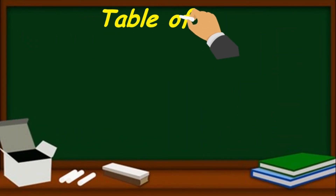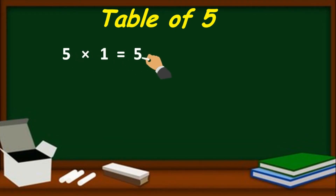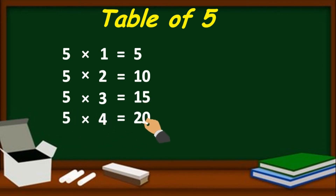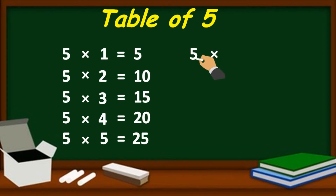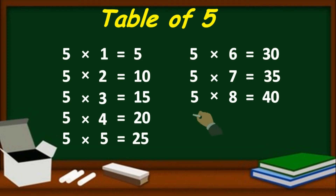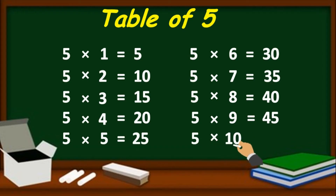Table of 5. 5 one's are 5, 5 two's are 10, 5 three's are 15, 5 four's are 20, 5 five's are 25, 5 six's are 30, 5 seven's are 35, 5 eight's are 40, 5 nine's are 45, 5 ten's are 50.